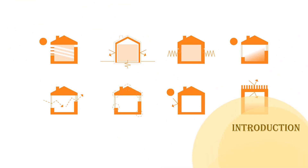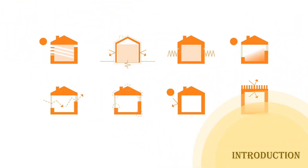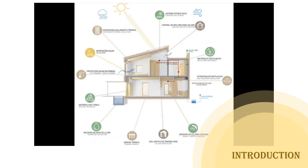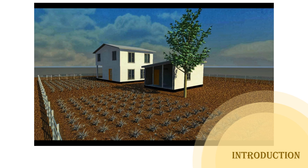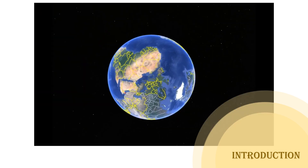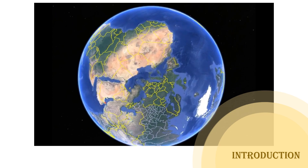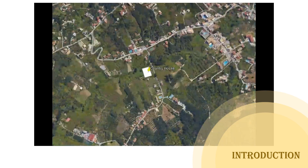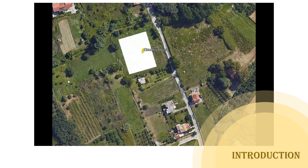Passive design maximizes the natural light, heat and air movement in a specific location in order to create a comfortable interior environment that reduces the need for energy to light, warm and cool a building. They take advantage of climate, site conditions and materials to create a building that functions in harmony with the environment. This research demonstrates the techniques for designing a passive country house in Europe, selecting strategies appropriate to climate by introducing passive methods of lighting, heating and cooling the building.